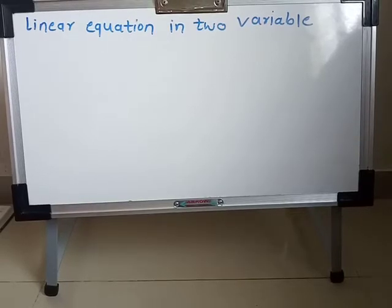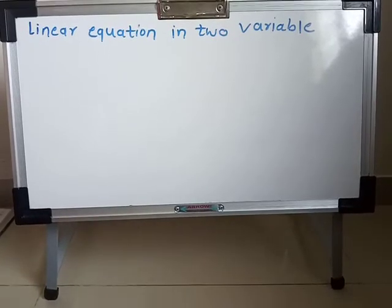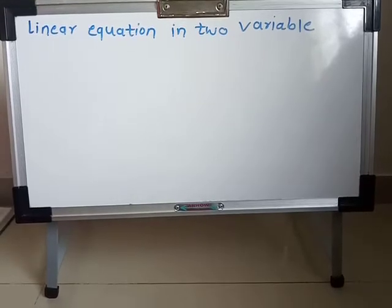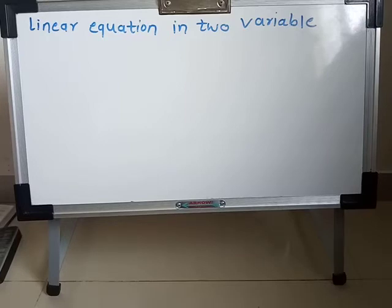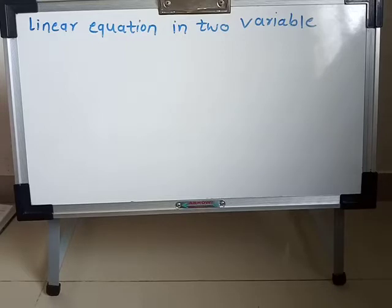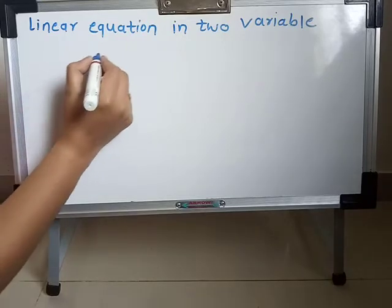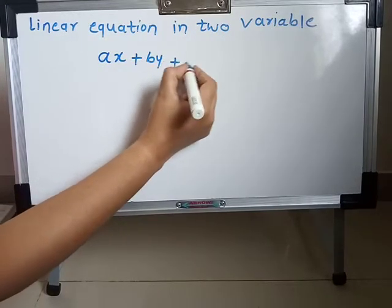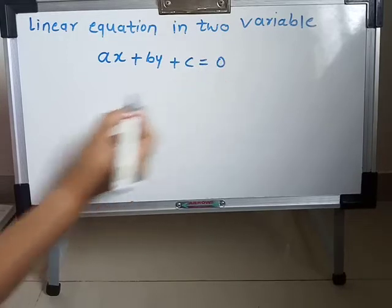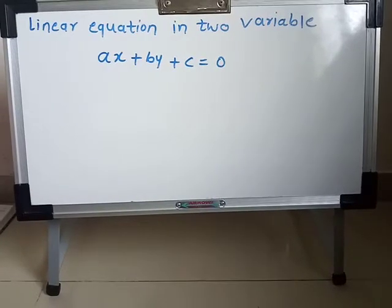Hi friends, today we see linear equations in two variables. What is the linear equation in two variables? This chapter is from standard 10th math, chapter number one, and we see practice set 1.1. First we see the definition of linear equation. A linear equation can be written in the form AX plus BY plus C is equal to 0. This is called the standard form of linear equation.